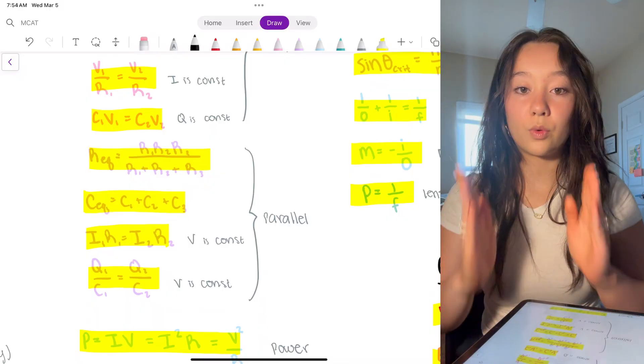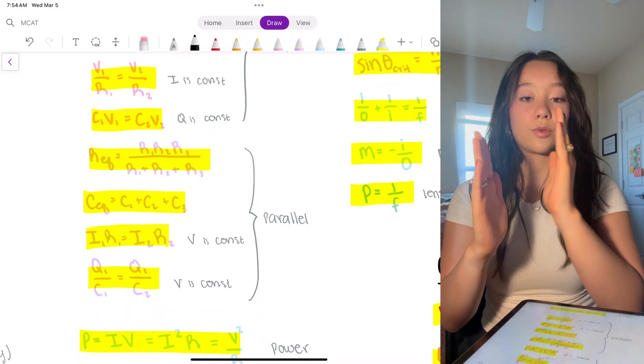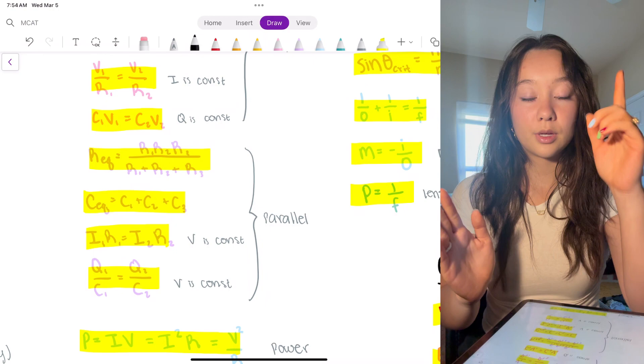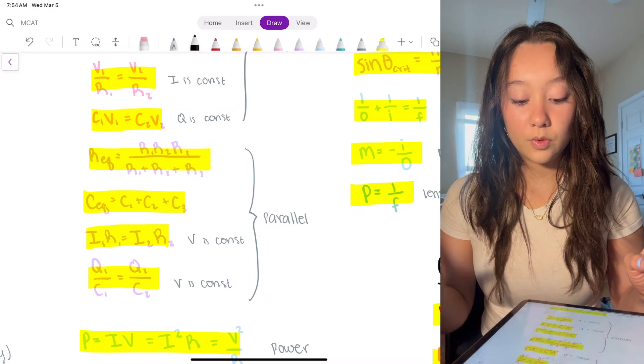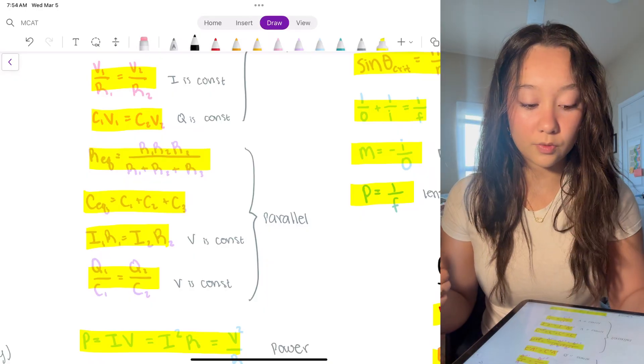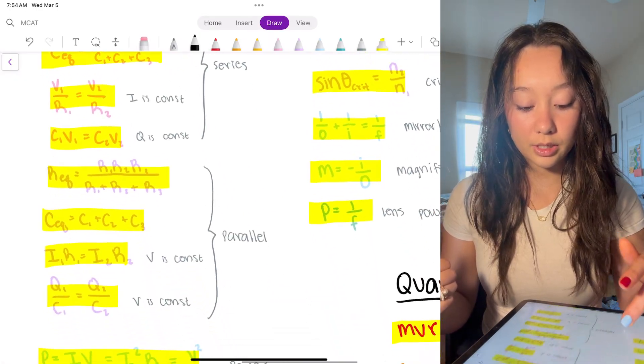Parallel voltage is always constant, so if you have two or three, however many parallel wires, voltages drop across those is always going to be consistent. Resistance in capacitance, we just talked about those. It's the opposite for parallel than it is in series.